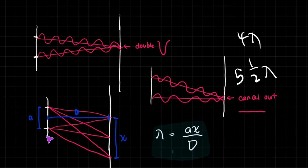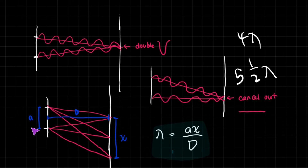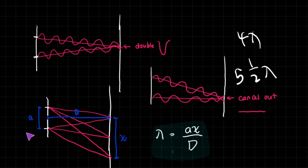Now let's look at this diagram. These two are the slits. Capital D is the distance between the slits and the cardboard where the interference fringes are forming. A is the distance between the slits, and X is the distance between two bright fringes. The most interesting thing is that we can actually determine the wavelength of the light if we know A, D, and X. The equation is lambda equals AX over D.